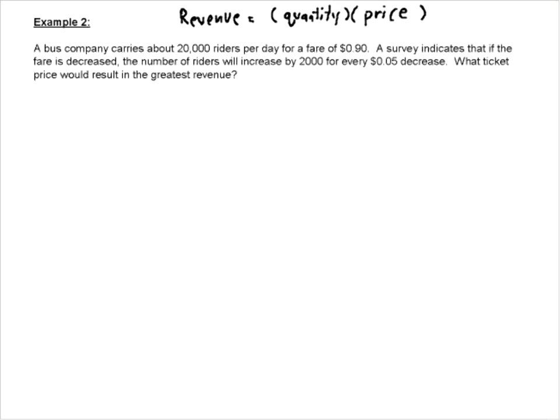So our unknown, in this case, is we're going to let X equal the number of price decreases. And that's what we're going to do when we're trying to maximize revenue, where you're going to increase or decrease the price. So X is going to be the number of price decreases.